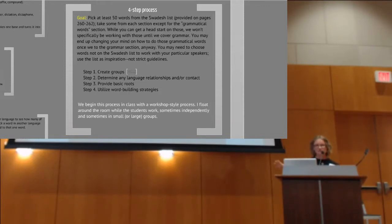Step two is determine if you want any relationships or contact, because that has to be captured with those cognates and borrowing type examples. Step three is actually providing the basic roots, and step four then is using those word building strategies to move forward. So as they do this, this is where we kind of start our workshop style. I float around the room and answer questions.